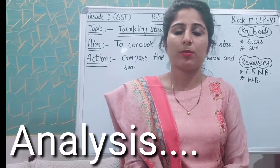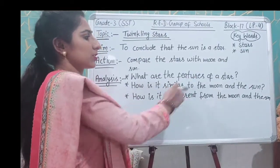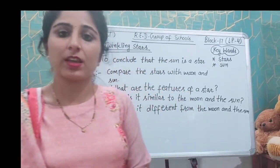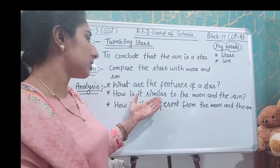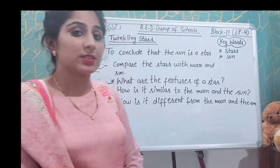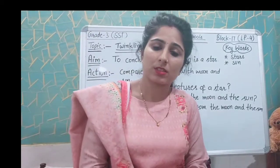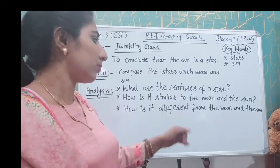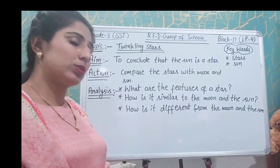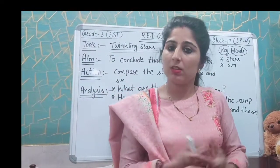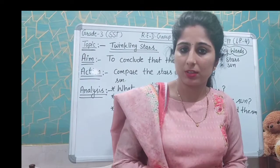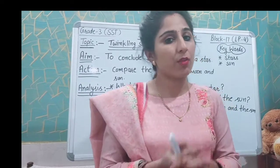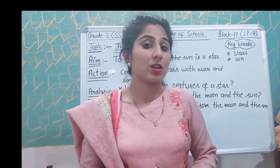Now moving to the discussion part. My first question: what are the features of a star? Stars can be seen only in the night sky, similar to the moon. They appear smaller than the sun and moon, but in fact they are bigger in size. The stars appear smaller because they are far away from the earth.